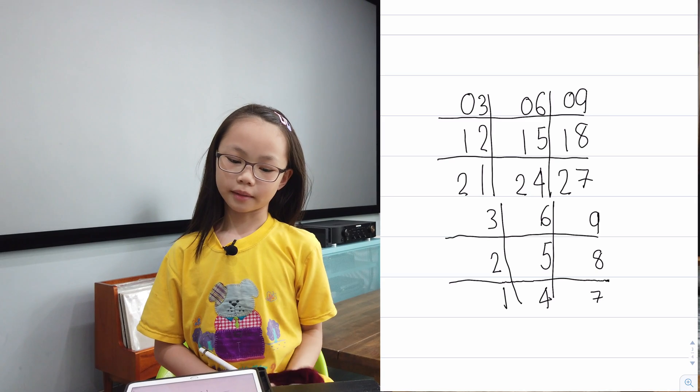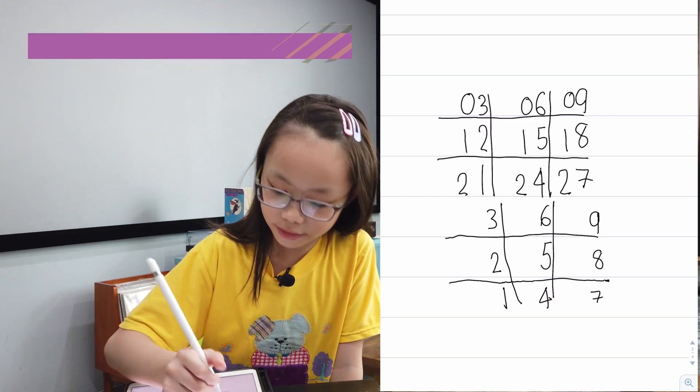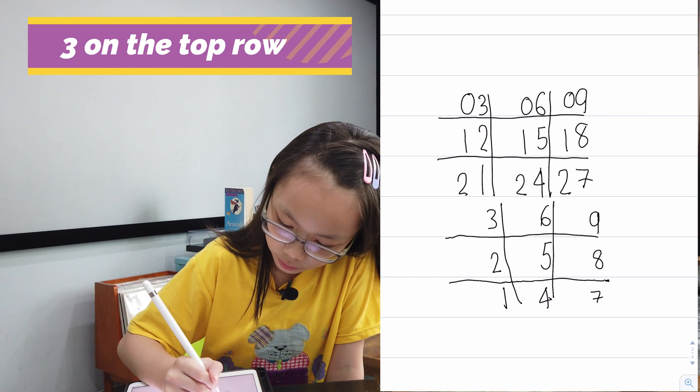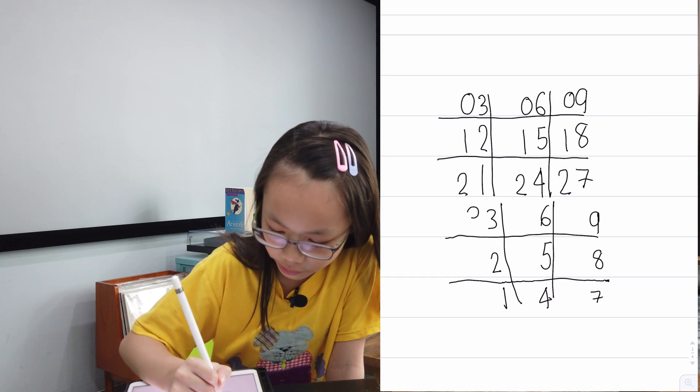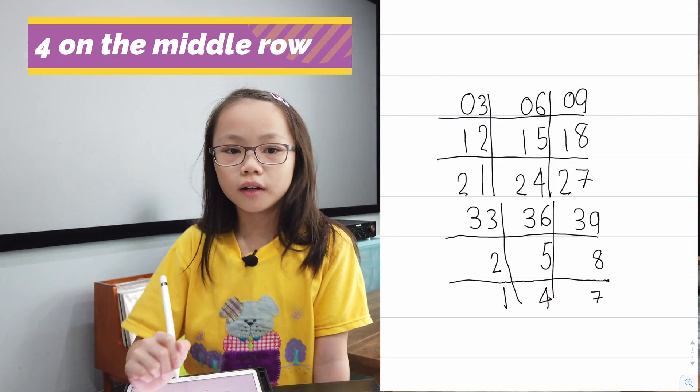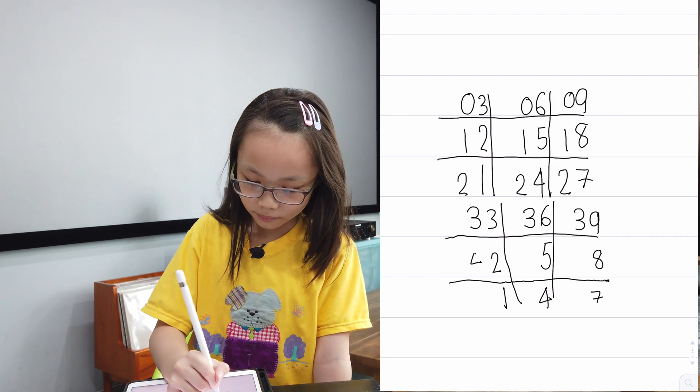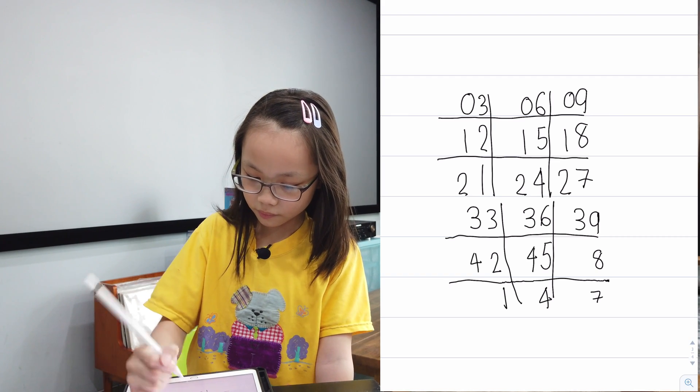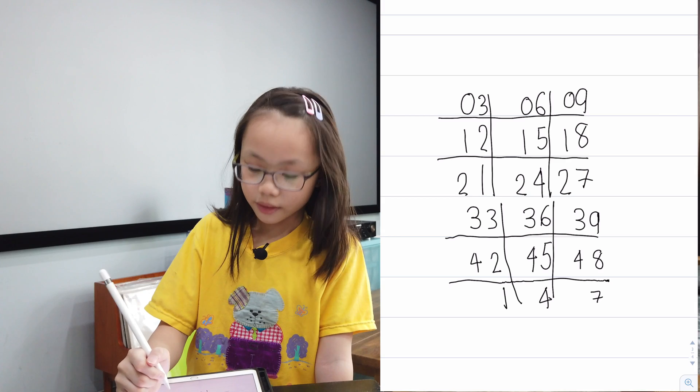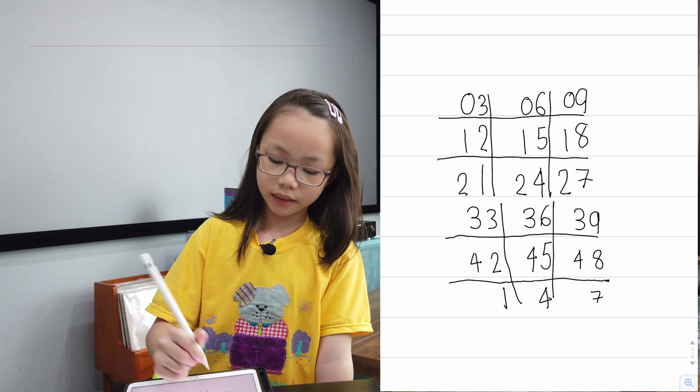we're going to write the numbers 3, 4, and 5. The number 3 goes in the first row like this. The number 4 goes in the second row like this. And the number 5 goes in the last row at the bottom like this.